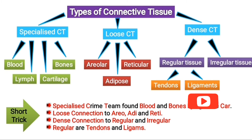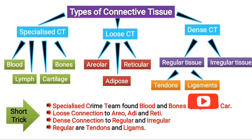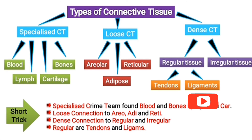Dense connective tissue means more connection to the mother — they are very close to the mother. So: dense connection to regular and irregular. Regular is further divided into two more types. Regular means those who very regularly commit crime — that's why regular contains tendons and ligaments.